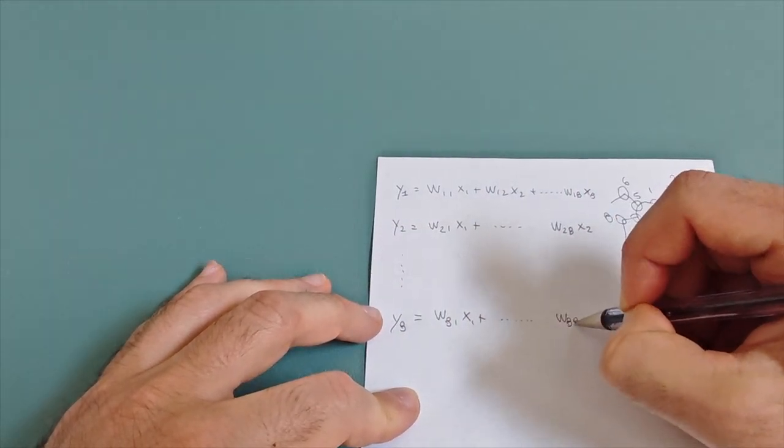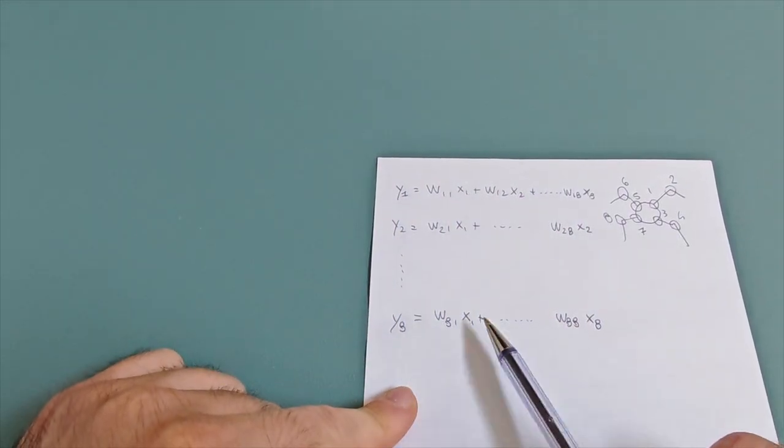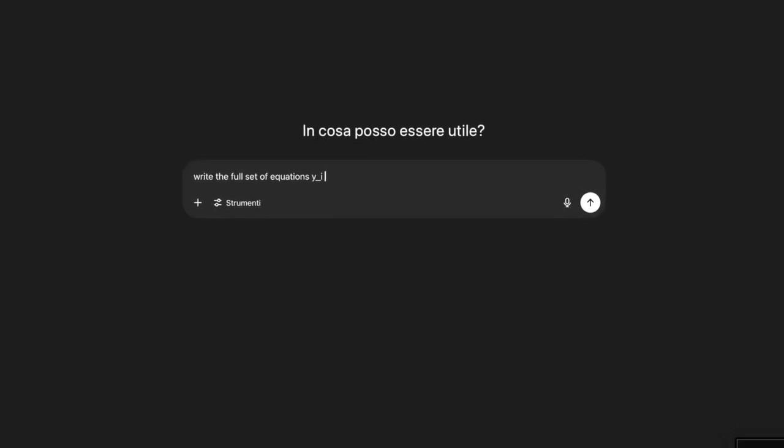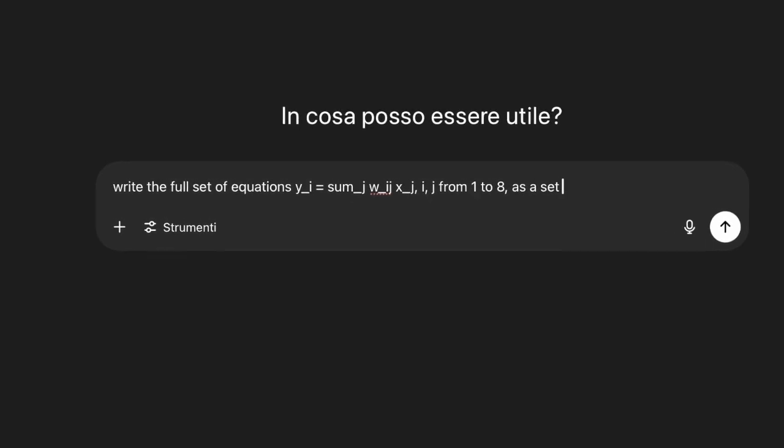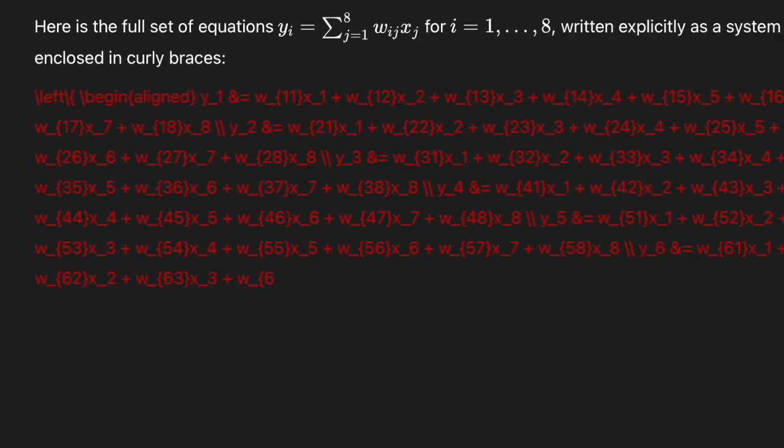To keep things simple, we'll use a linear policy, which means the action is calculated with a straightforward formula based on the input state. No deep neural networks here.